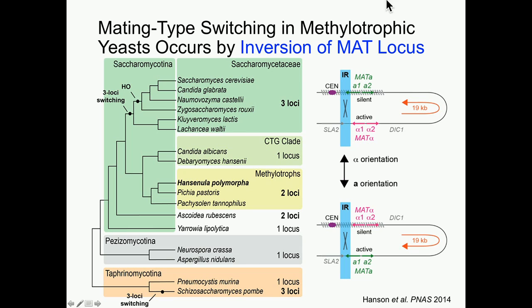Importantly, we found that in this genomic region you can find genes like SLA2 and DIC1, which are also present in Saccharomyces cerevisiae, demonstrating the synteny of this system with that found in S. cerevisiae. So we know that it shares a common origin with the previously known three-cassette system.